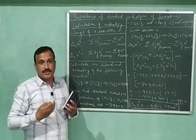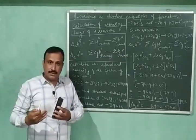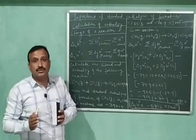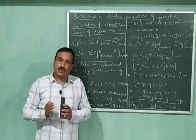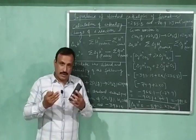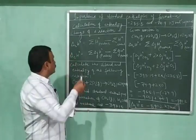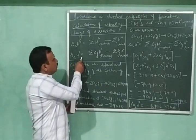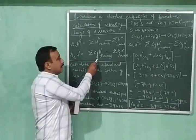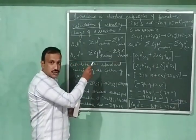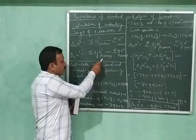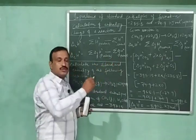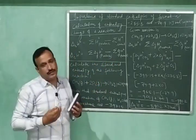Since the standard molar enthalpy of a compound equals its standard enthalpy of formation, the standard enthalpy change of a reaction equals the sum of standard enthalpies of formation of products minus the sum of standard enthalpies of formation of reactants.